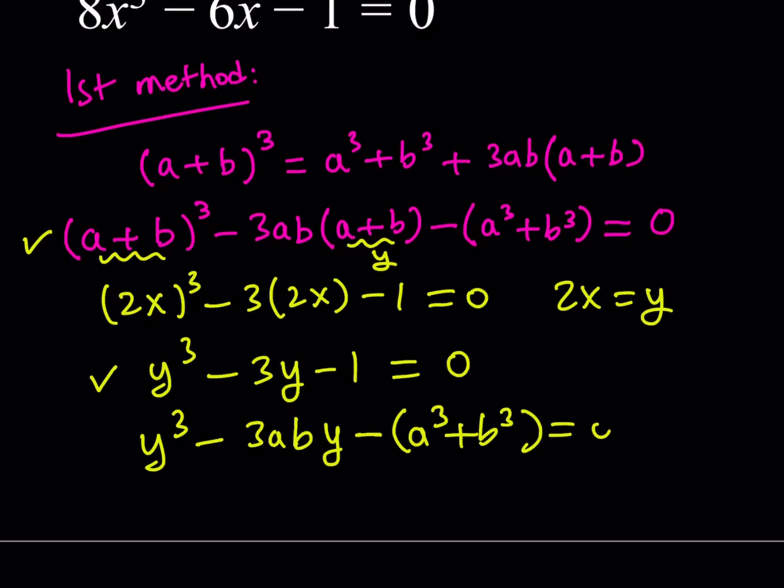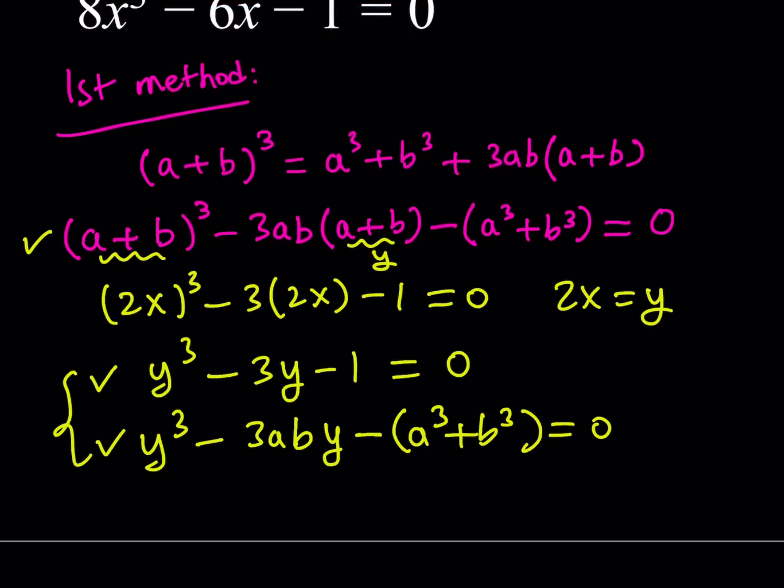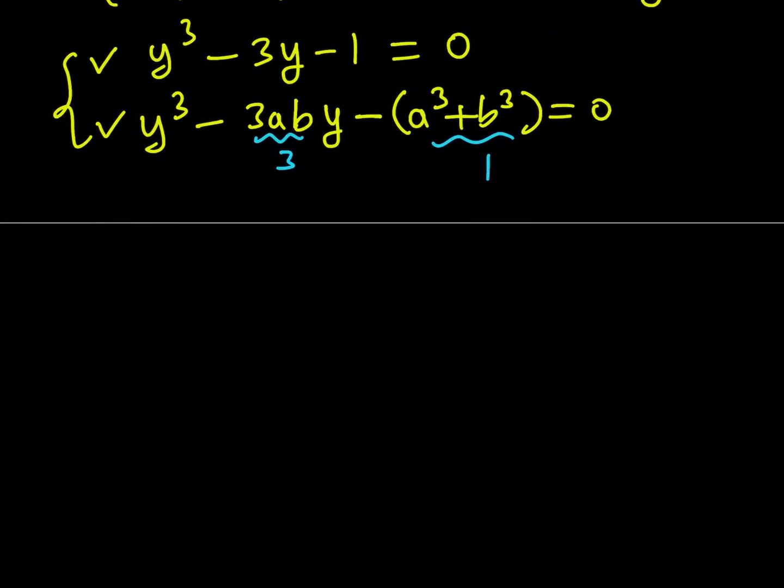Now, you can go ahead and compare these two equations. If they are the same, then we can safely say that 3ab = 3. And this is equal to one. That gives you a system of equations. And interestingly, while solving the cubic, you end up with a quadratic system. Does this look quadratic? Let's find out.